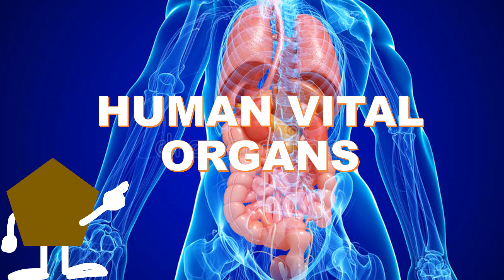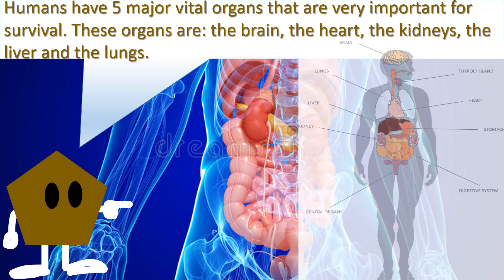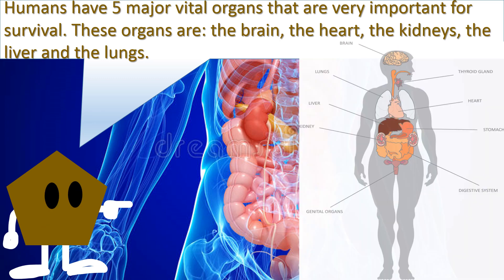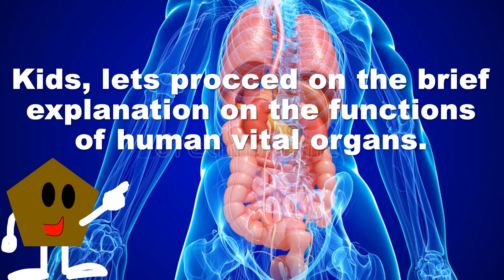Human vital organs. Humans have five major vital organs that are very important for survival. These organs are the brain, the heart, the kidneys, the liver, and the lungs. Let's proceed on the brief explanation on the functions of human vital organs.